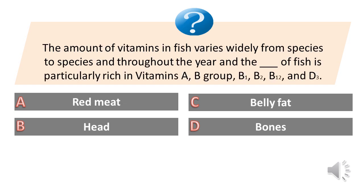The amount of vitamins in fish varies widely from species to species and throughout the year, and the blank of fish is particularly rich in vitamins A, B group, B1, B2, B12 and D3. A. Red meat. B. Head. C. Belly fat. D. Bones. Answer is A. Red meat.